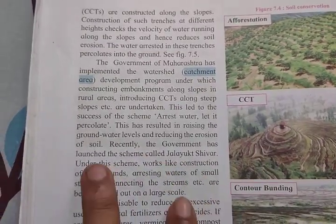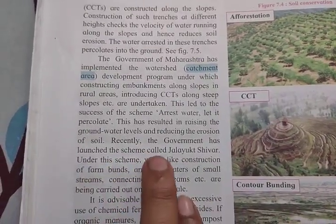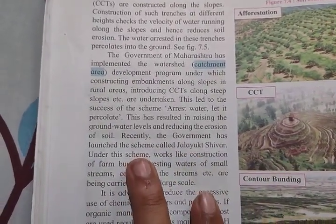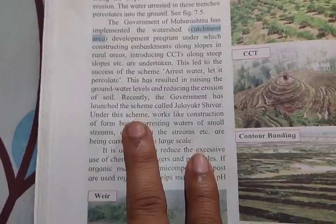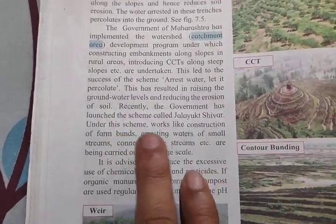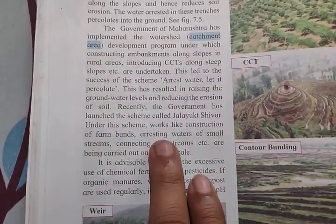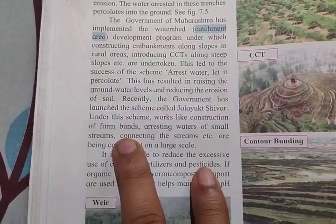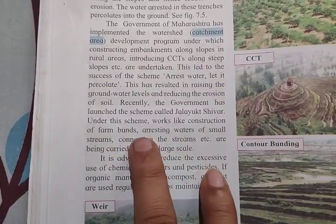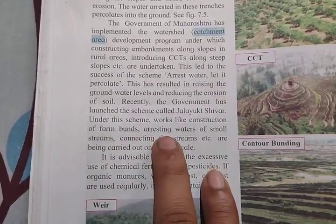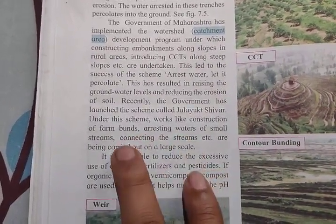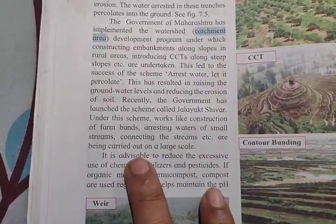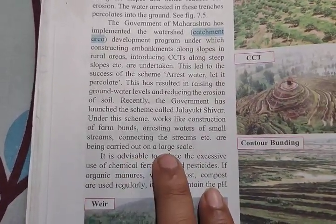Recently, the government has launched a scheme called Jalayukta Shivar. Under this scheme, works like construction of farm bunds, arresting water of small streams, and connecting the streams, etc. are being carried out on a large scale.